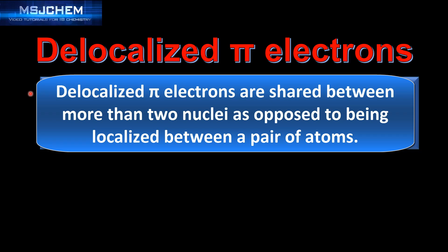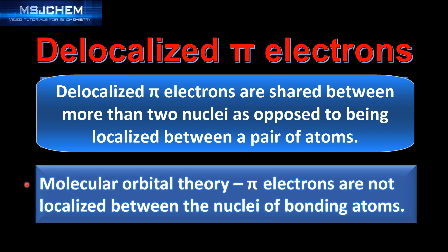Delocalized pi electrons are shared between more than two nuclei, as opposed to being localized between a pair of atoms. This is a feature of the molecular orbital theory, in which pi electrons are not localized between the nuclei of bonding atoms. This is obviously different to the valence bond theory, in which the pi electrons are localized between the nuclei of bonding atoms.